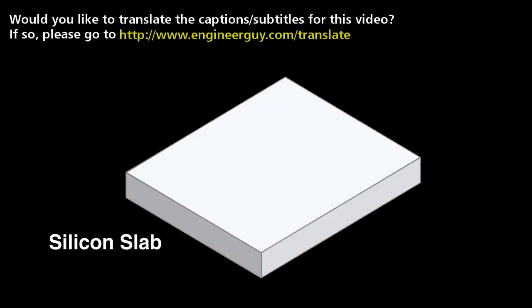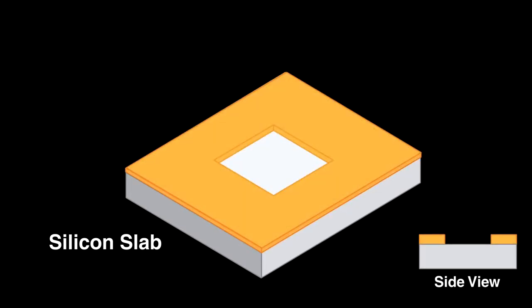To make a pyramidal hole in silicon, engineers cover all but a small square with a mask impervious to the potassium hydroxide. Now, it only etches within the square shape cordoned off by the mask. The potassium hydroxide dissolves silicon faster in the vertical than in the horizontal direction. This is why it makes a pyramidal hole.